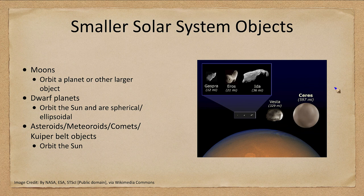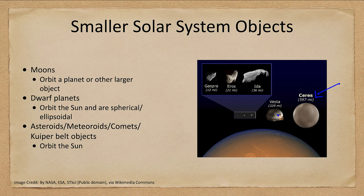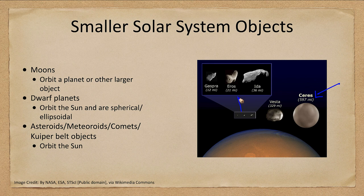To give an idea, Ceres, which is actually one of the dwarf planets is pictured here, about 600 miles across. Vesta, a little smaller than that, almost half that size. And then three others that have been observed closely here. But you can see again how small they are. Most of the asteroids are relatively small objects, just tens of miles across.